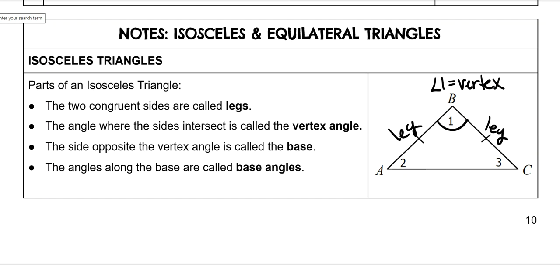The side opposite the vertex angle is called the base, so this bottom is the base. And then we have base angles, which are these two and they're always congruent. Those base angles are always across from the legs that are the same, and they are also congruent.